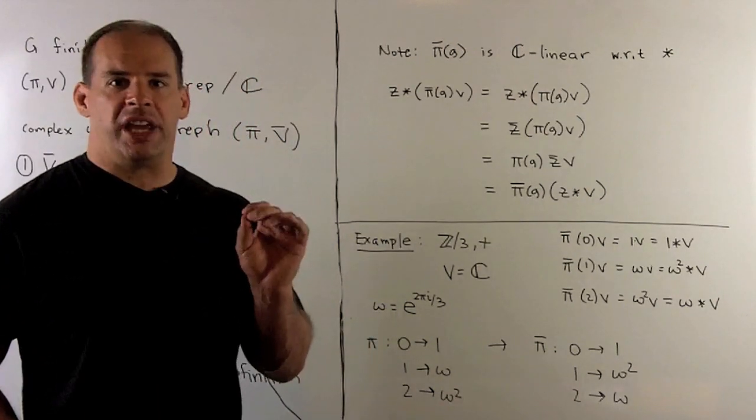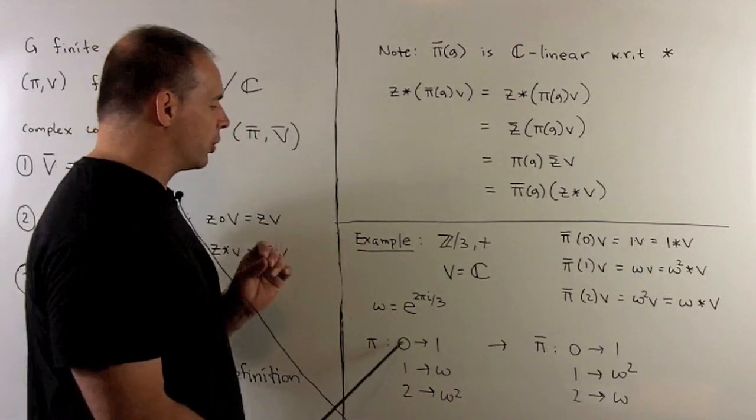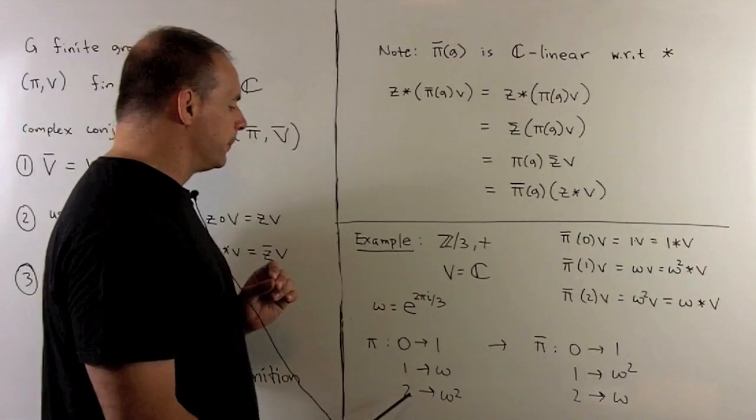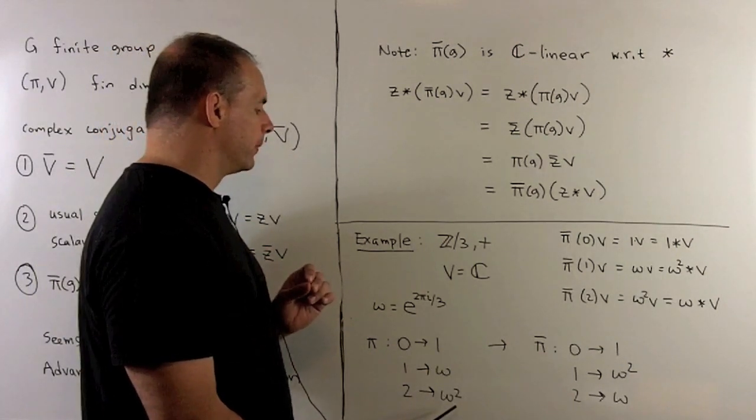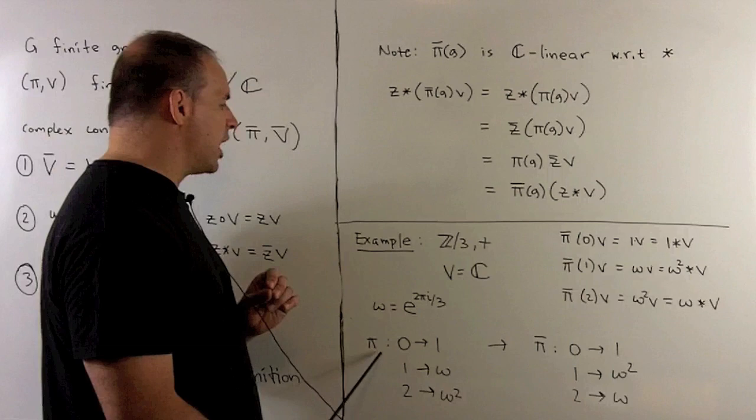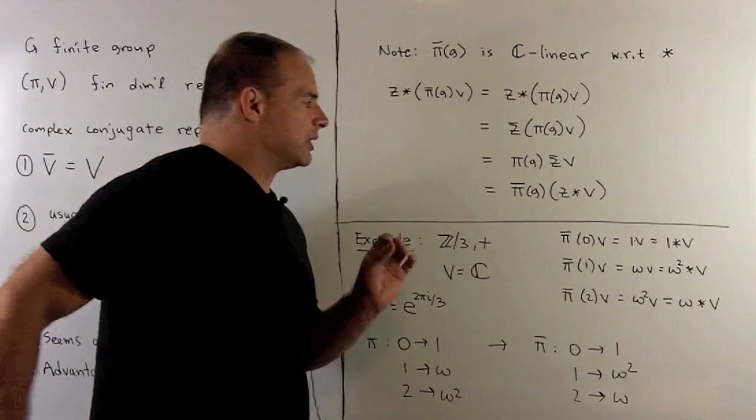I can define a representation as pi sending 0 to 1, 1 to omega, 2 to omega squared. If we take the complex conjugate of pi, what does that do?